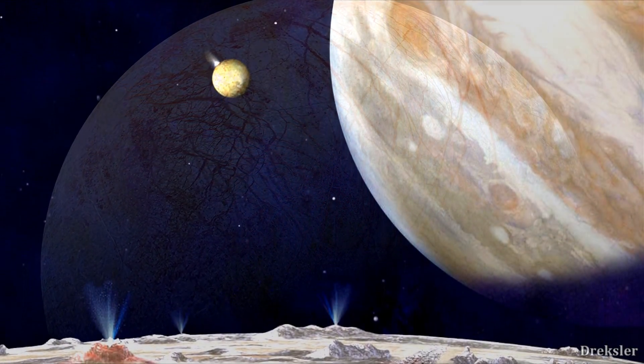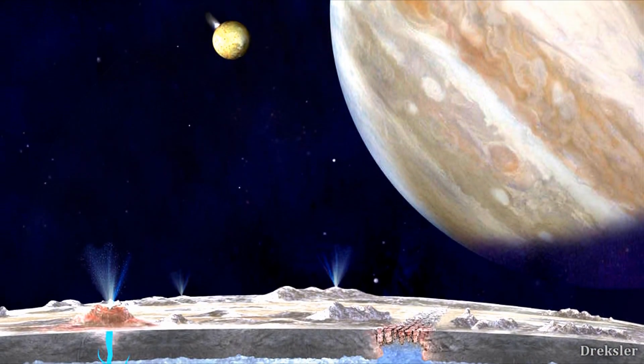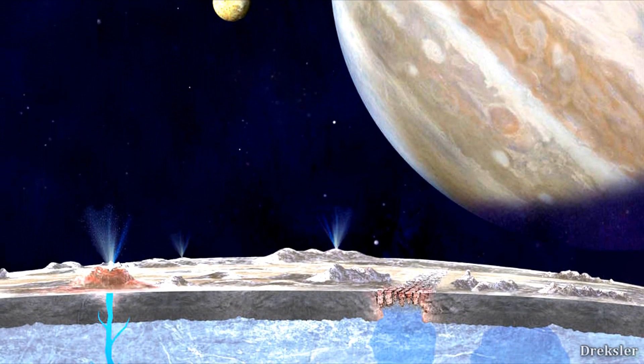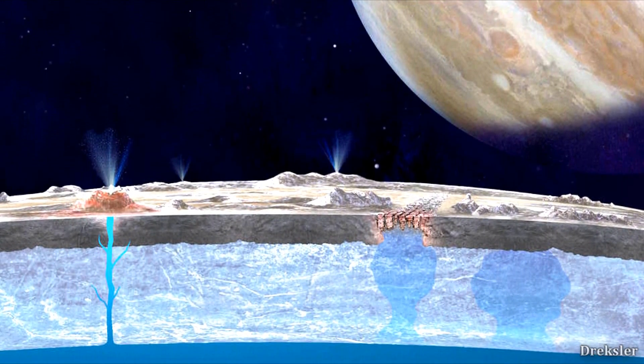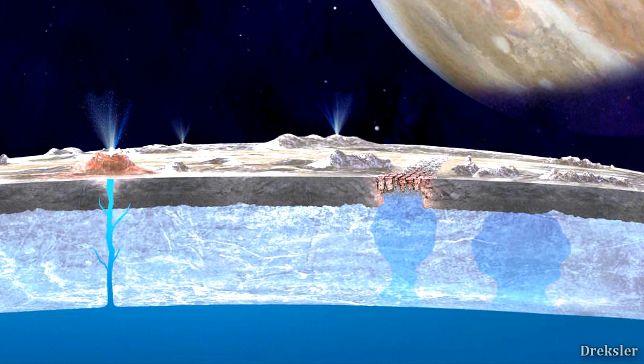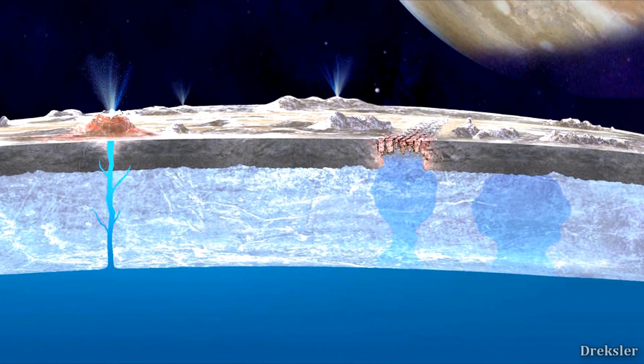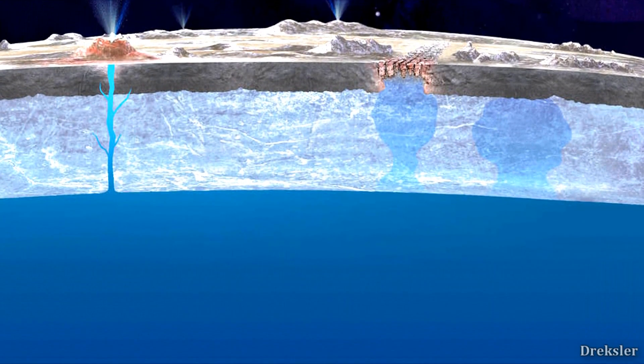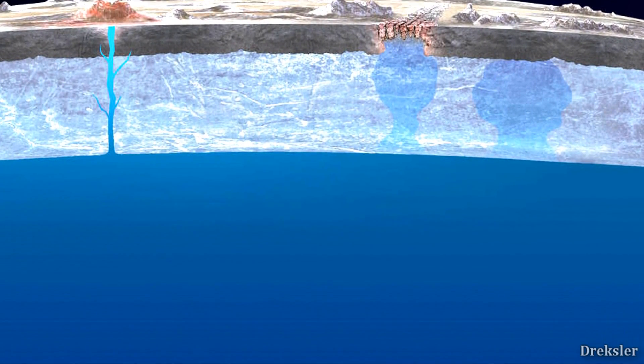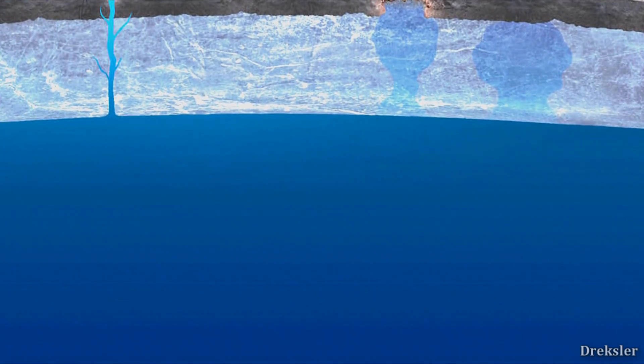The ocean is covered by a 20 kilometer ice crust and should be around 100 kilometers deep, which is 9 times deeper than the deepest part of our ocean on Earth. It is one of the most promising worlds for alien life to exist. Of course, we are not thinking of anything too complex, but there is a high chance that something like a single celled organism exists in it.